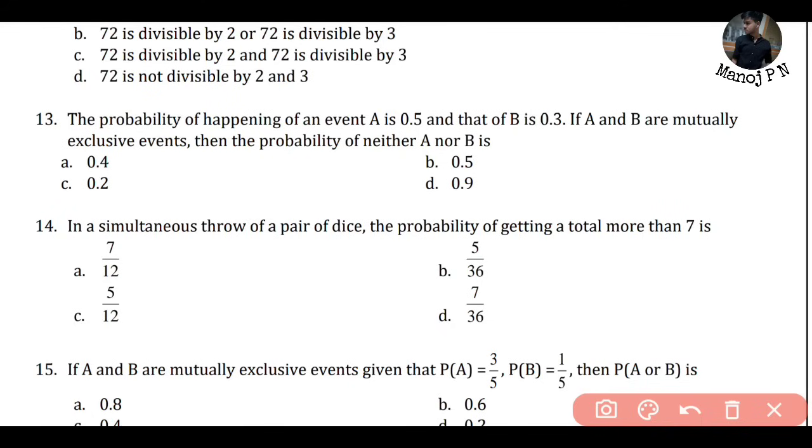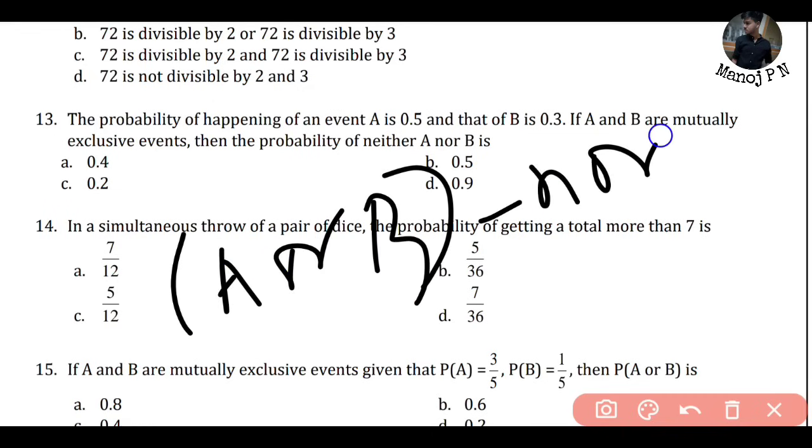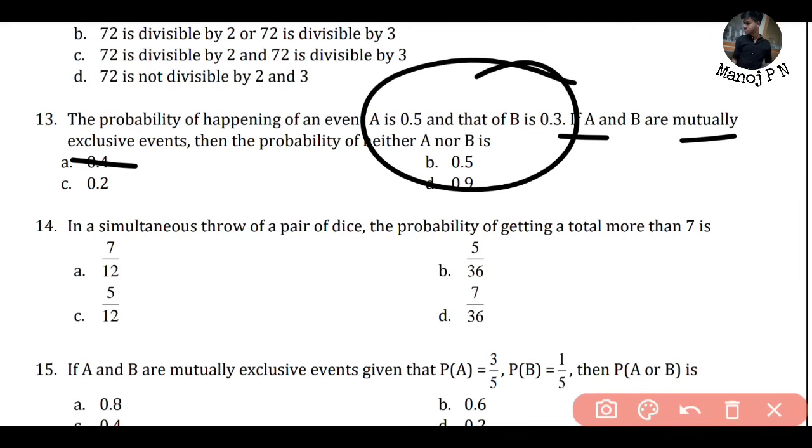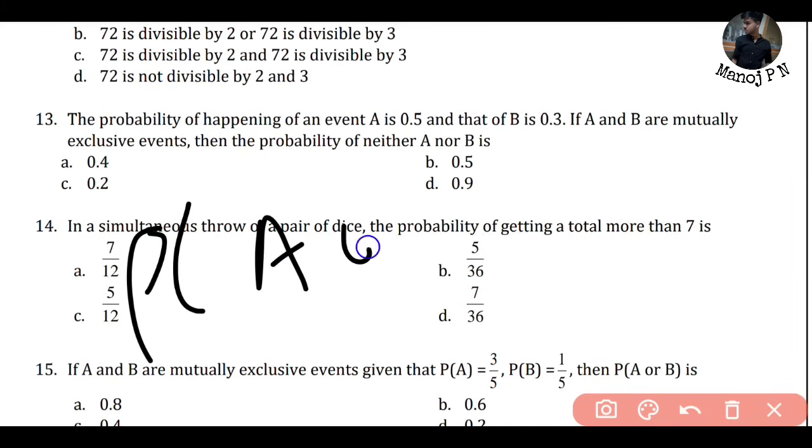I'll apply this formula to the question. Since A and B are mutually exclusive, P of A plus P of B is equal to P of A or B. So P of A plus P of B - which is P of A or B - which is 0.8, will be equal to P of A or B. Now what they're asking is P of neither A nor B. That will be 1 minus P of A or B. Substitute the value: 1 minus 0.8. The answer comes to 0.2. See, that is the answer. C, that is the option.